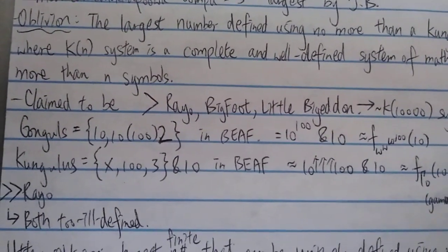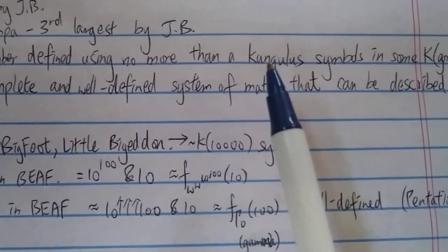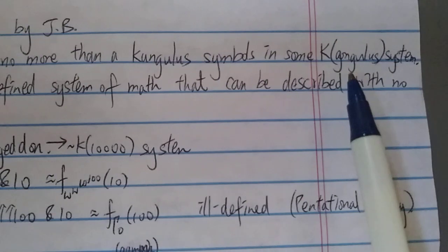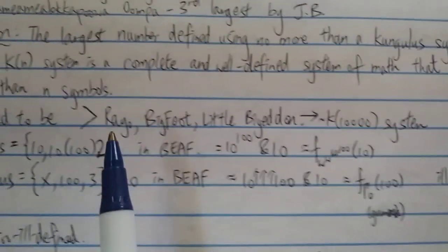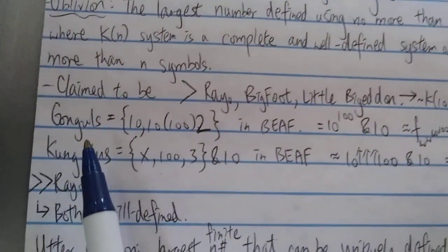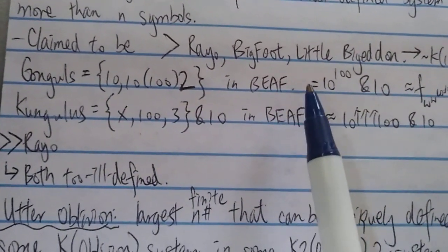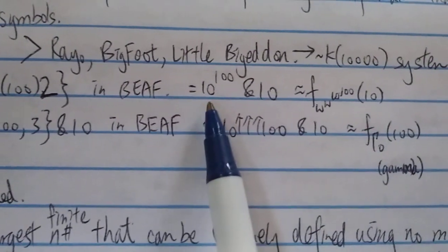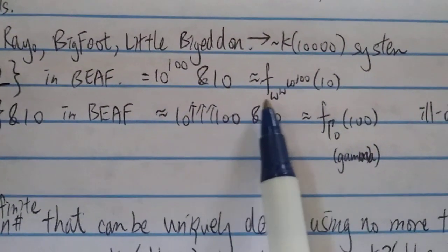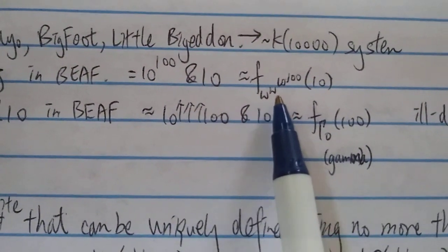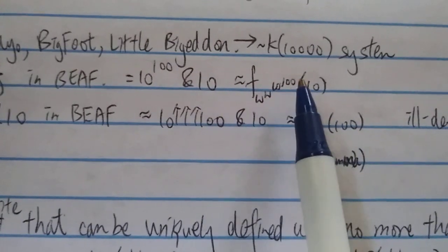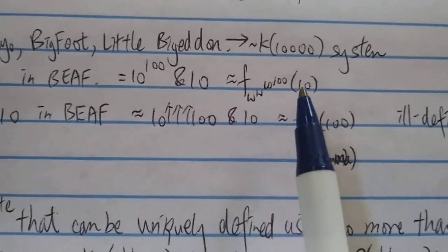So it's ill-defined, basically. But first of all, let's see what is congulous and gongulous. So basically congulous is equal to {10,10,102} in BEAF, which I guess can be written as a googol {n,10}. This size is around f of omega to the omega to the omega (110), so it's pretty big.